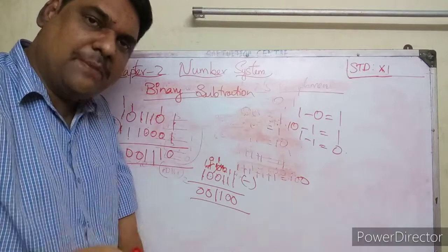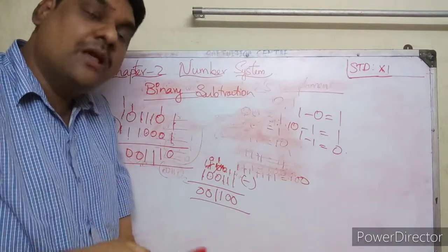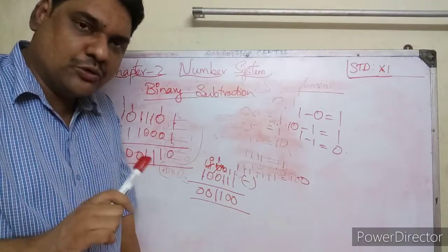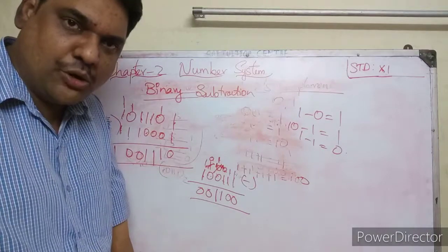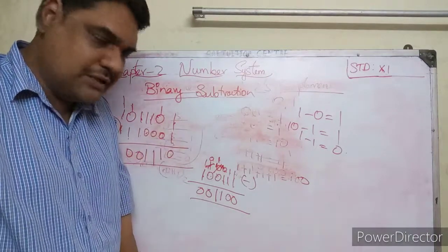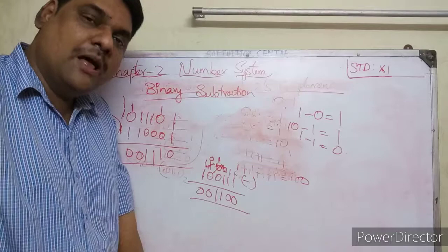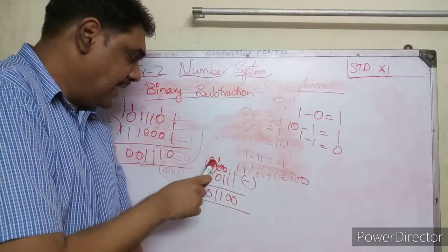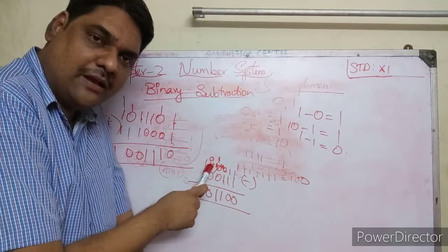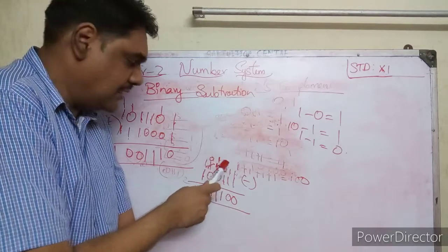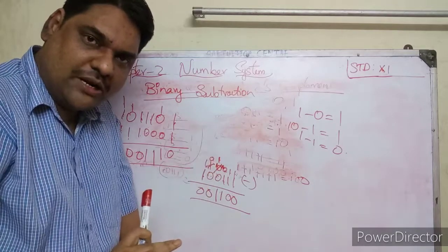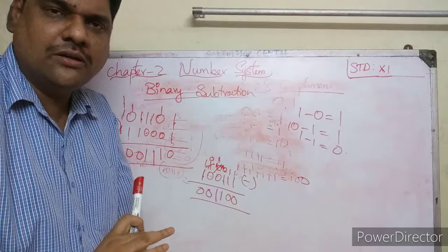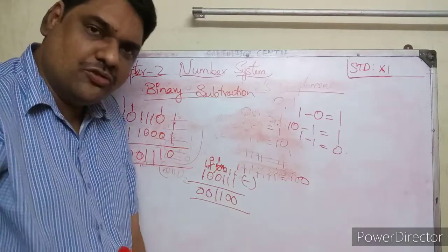When one minus zero, you get one. When zero minus one, you need to borrow. When borrowing, the zero becomes 10, then 10 minus 1 equals 1. This is binary subtraction. Thank you, children.